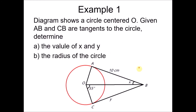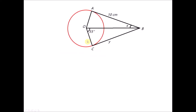Let's try Example 1. The diagram shows a circle centered at O, where AB and CB are tangents to the circle, intersecting at point B. We need to find the values of X and Y, and then find the radius OA or OC. Based on the properties we've learned, since AB and CB are two tangents intersecting at B, we know that AB equals CB — so Y equals 10.